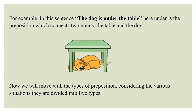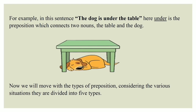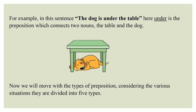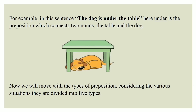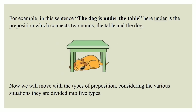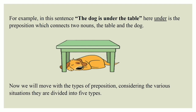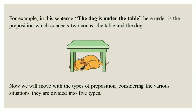For example, in this sentence: 'The dog is under the table.' See the picture here. The dog is lying under the table, not in front of the table or behind the table. Here, 'under' is the preposition which connects the two nouns — the dog and the table.